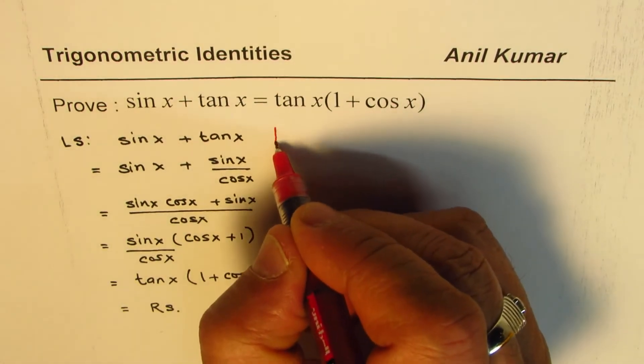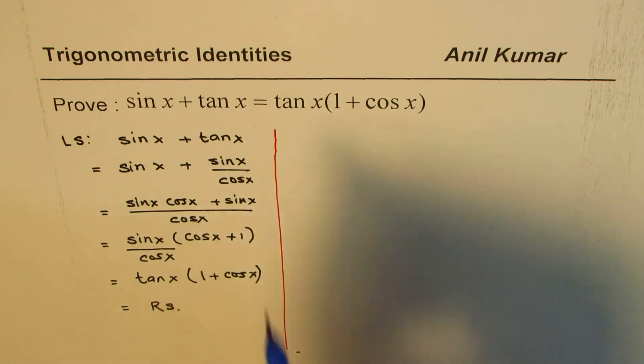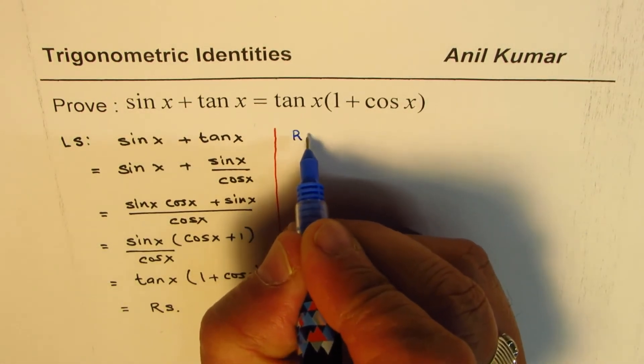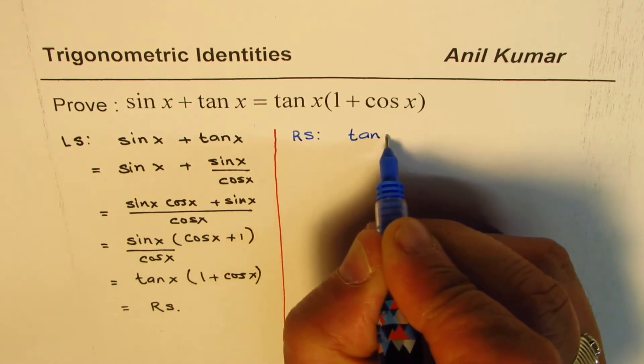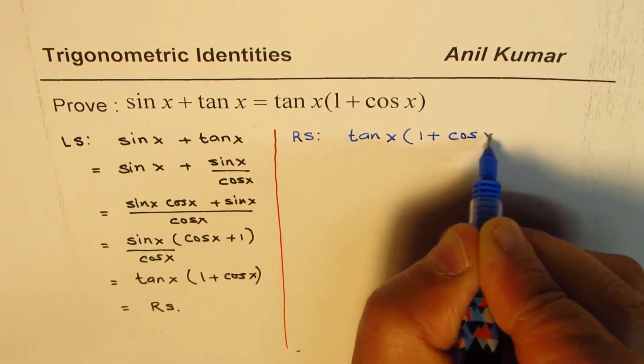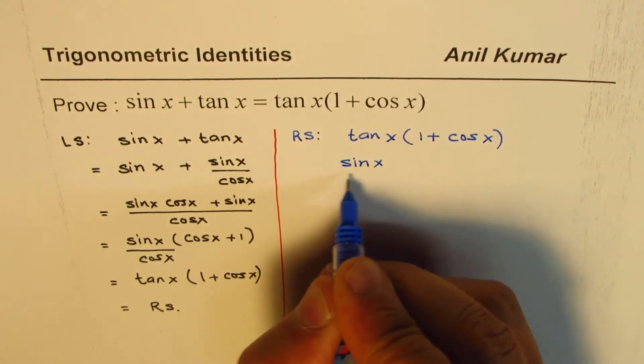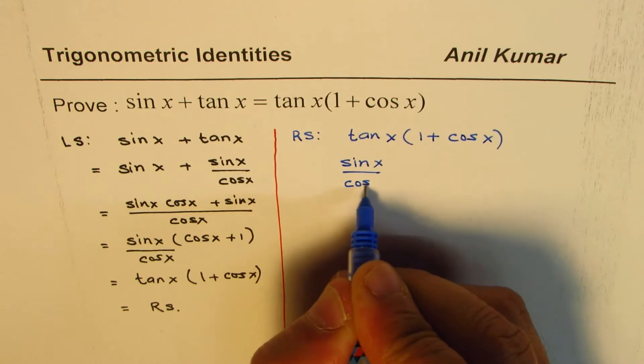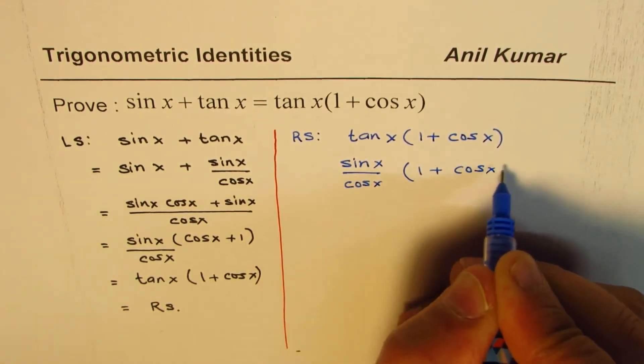Now let us see if we would have started from the right side then how it could unfold. So let's write down the right side which is tan x times 1 plus cos x. tan x can be written as sin x over cos x times 1 plus cos x.